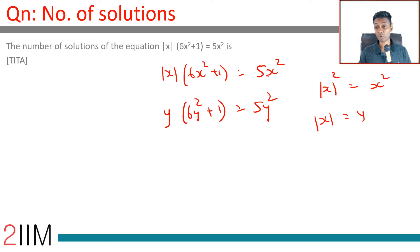x² is |x| whole square. This way, we can cancel a y. 6y² + 1 = 5y. 6y² - 5y + 1 = 0.